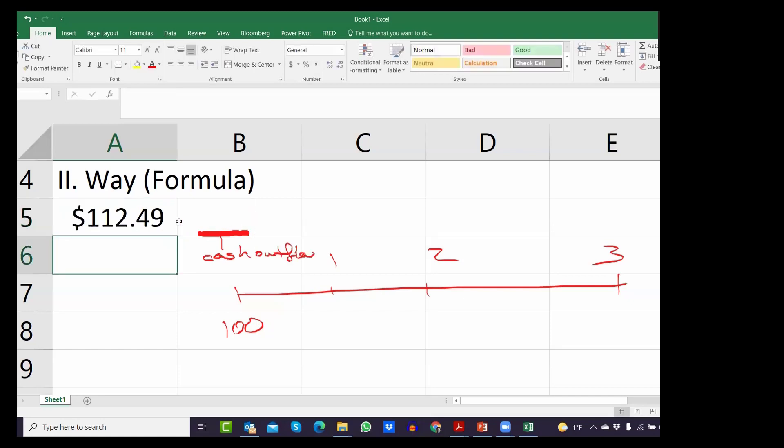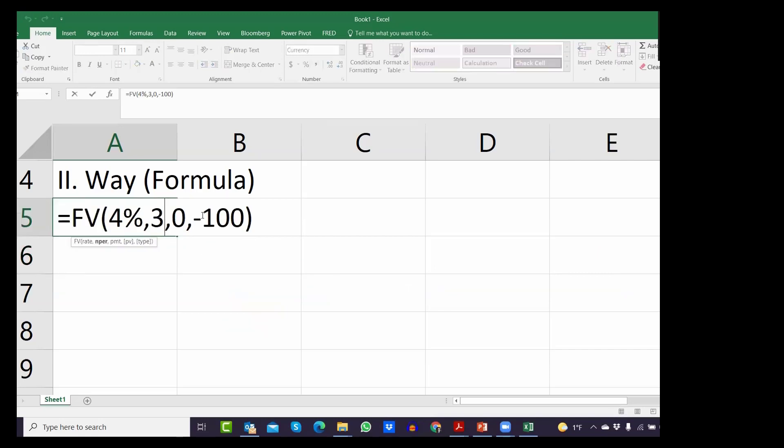When you hit enter, you are going to receive the same exact answer you received a moment ago. For the sake of consistency, I will always use negative for cash outflow and positive for cash inflow. So the answer to this question is $112.49, which is exactly what we got in the previous calculation.